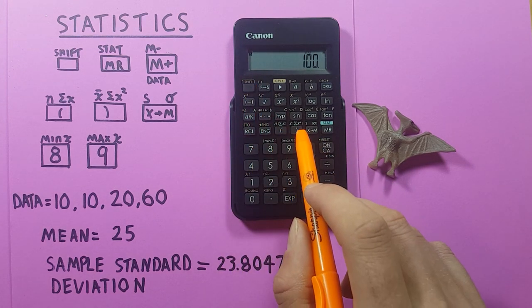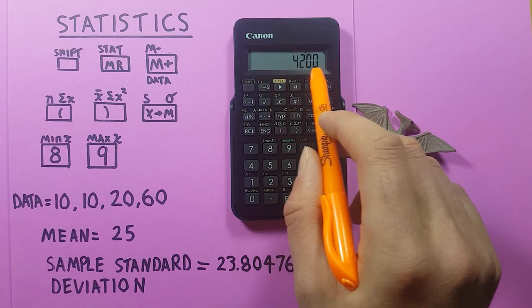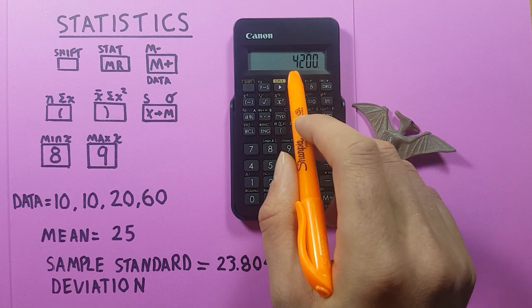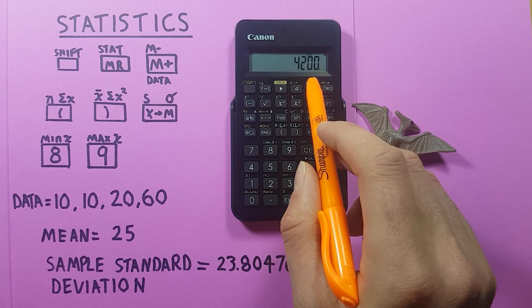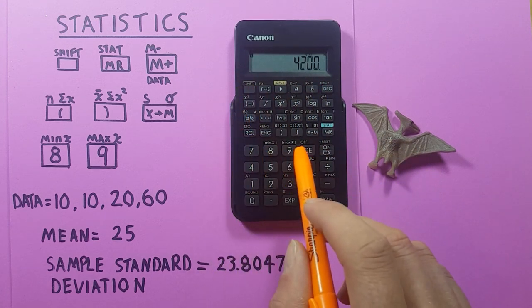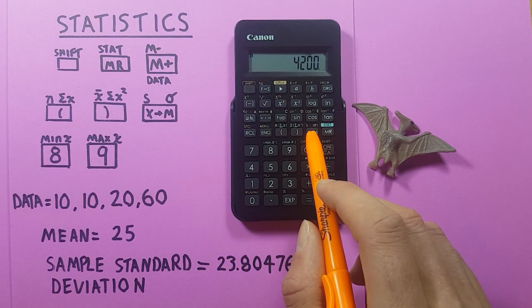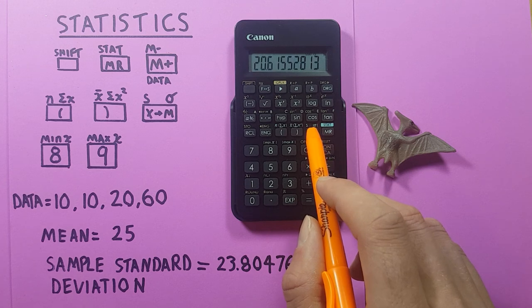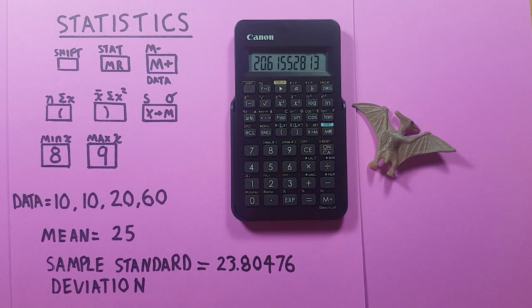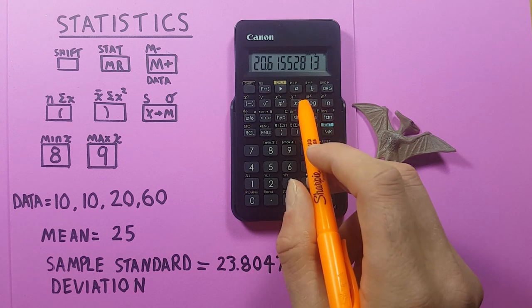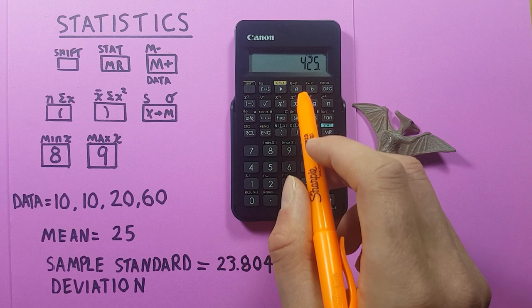If we press shift close bracket, we get the sum of square of items or numbers in our data set. If we press shift X to M, which is the small sigma, this gives us the population standard deviation, which we can also get the variance for by pressing the X squared key. There we go.